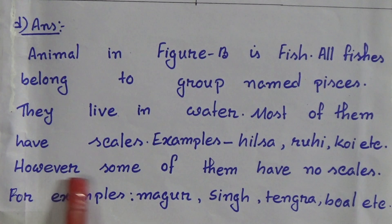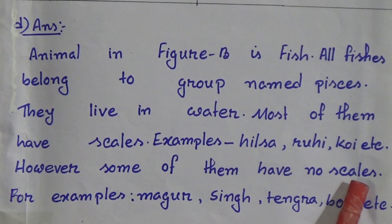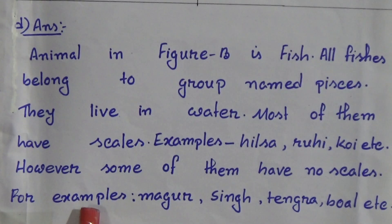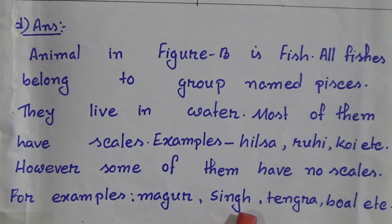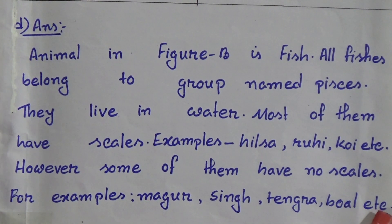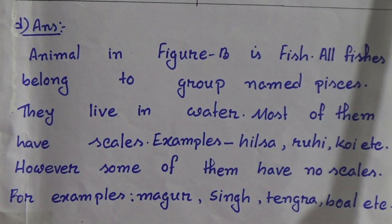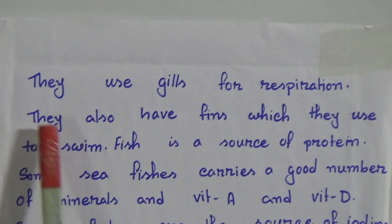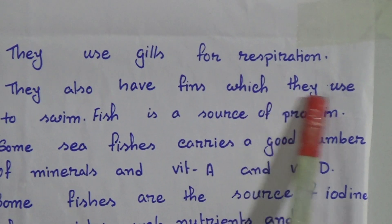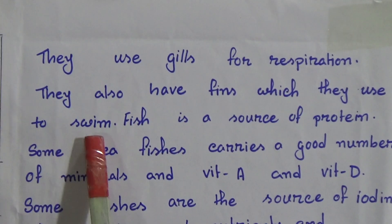However, some fishes have no scales — for example, Maru, Sheen, Tengra, Boal, etc. Fishes use gills for respiration. They also have fins which they use to swim.